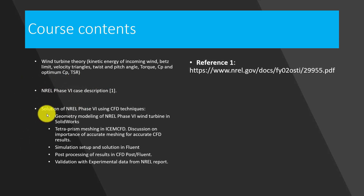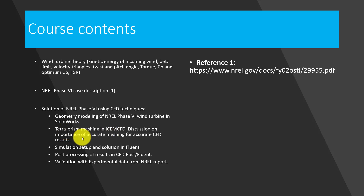Here are the brief steps for this course. First, we model the geometry of the NREL Phase 6 wind turbine in SolidWorks. Then we will make a hybrid mesh — a combination of tetra and prism meshing — in ICEM-CFD. We will discuss the important things in meshing to get accurate results, including the important areas of the wind turbine, how to mesh and refine them, how to create prism layers in the boundary layer, the first cell height, and the appropriate Y-plus values according to the turbulence model we will use.